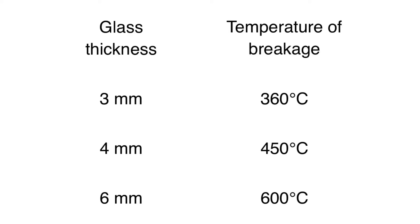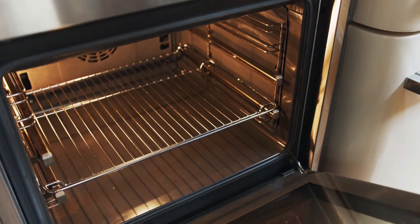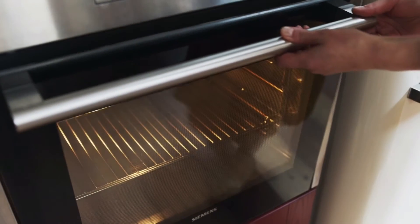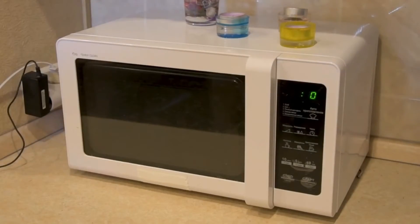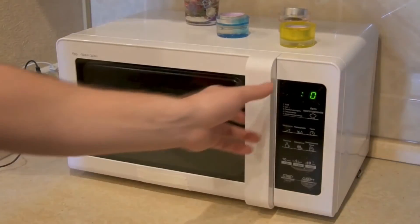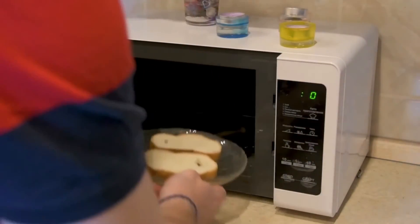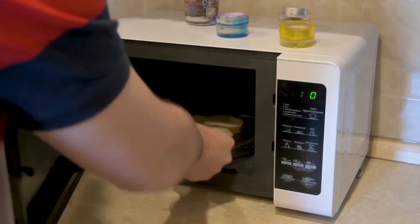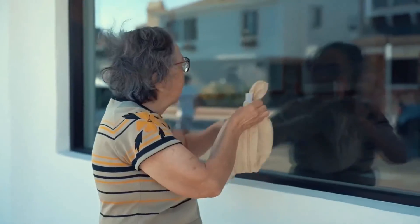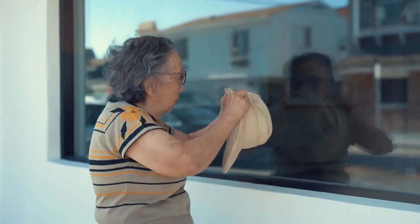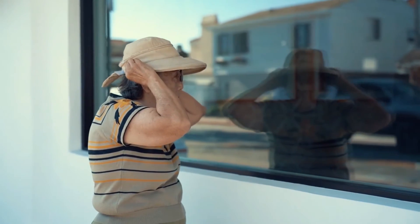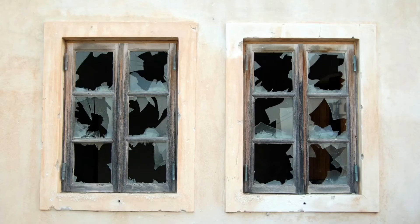Not all glass windows break at the same temperature. Different types of glass have different thermal resistance capabilities. That is the reason the glass of your oven or microwave does not break even in extreme heat — because they have been specially treated and made resistant to temperature. Apart from the earlier mentioned aspects, factors like window size, heat vents, glass coating, shading patterns, glass defects, and planar temperature gradient are also known to affect the breakage of glass due to fires.